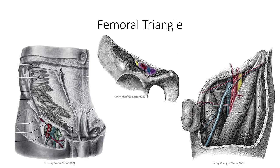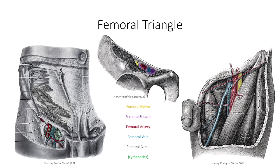Before we can discuss the neurovascular supply to the lower limb, we need to identify the axis point. In the arm, that was the axillary space. In the case of the lower limb, we have the femoral triangle, named for its three boundaries: the sartorius laterally, the adductor longus and pectineus medially, and the inguinal ligament superiorly, which also forms a bridge under which neurovascular structures pass between the lower limb and abdominal pelvic cavity. The floor of the triangle is formed by the iliopsoas muscle and the roof is covered by the fascia lata. The contents, from lateral to medial, are the femoral nerve, femoral artery, femoral vein, and the lymphatics separated by an empty space. The mnemonic NAVEL is often used to remember this association.